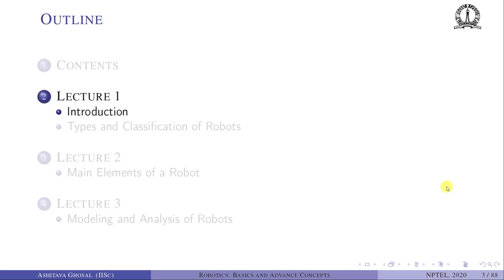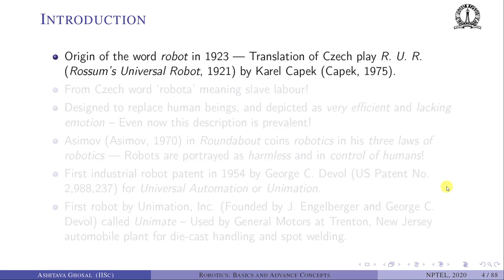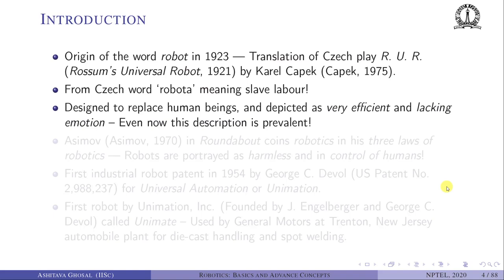The origin of the word robot is from 1923. It is basically a translation of a Czech play called RUR, which stands for Rossum's Universal Robot, written in 1921 by Karel Čapek. The word robot comes from the Czech word 'robota' meaning slave labor. In the play, robots are designed to replace human beings and are depicted as very efficient and lacking emotion — a description that is still prevalent today.